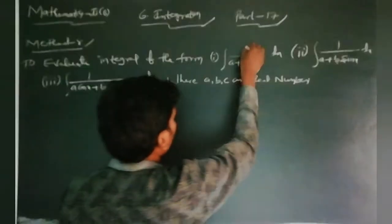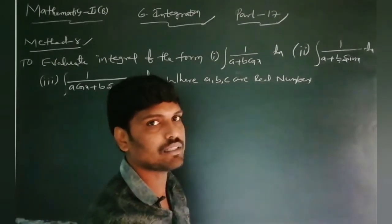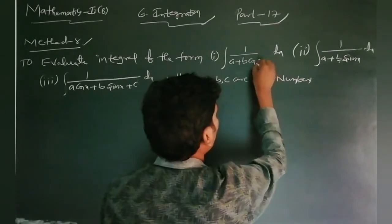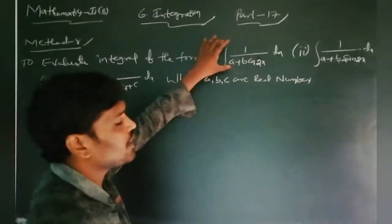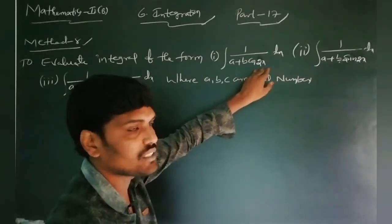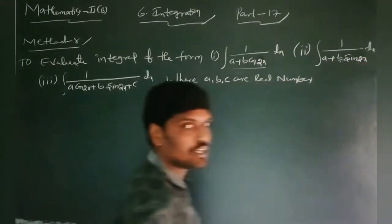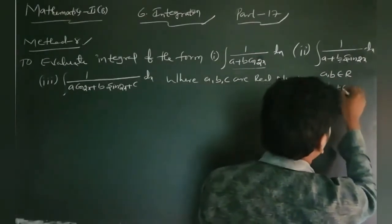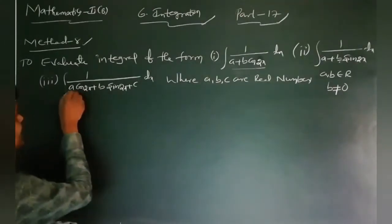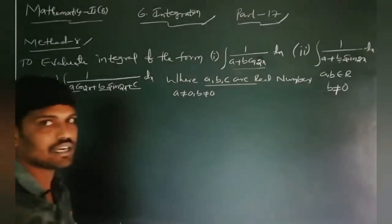For integrals of the form 1/(A + B cos 2x), 1/(A + B sin 2x), or 1/(A cos 2x + B sin 2x + C) — that is, where the angle is 2x — the method is similar to Method A, just with 2x in place of x. Here A and B are real numbers with B ≠ 0, and in Case 3, A ≠ 0 and B ≠ 0.